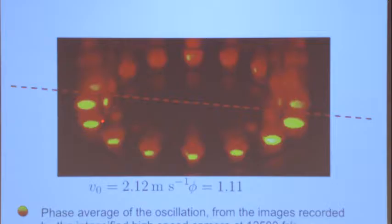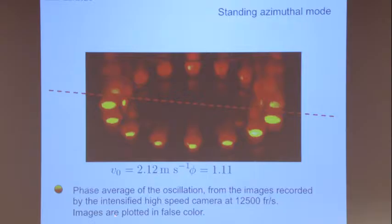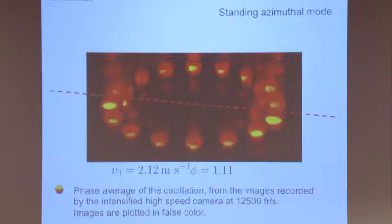This is the standing mode, and now it's quite clean. It's like red lights getting into yellow lights: when you are yellow it's strong, when you are red it's small, and it goes from one place to the other. These are phase-averaged oscillations, using a high-speed camera and phase averaging the data. Images are plotted in false color just to improve visibility.